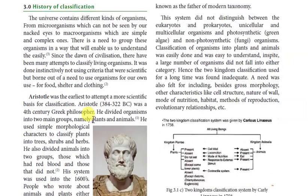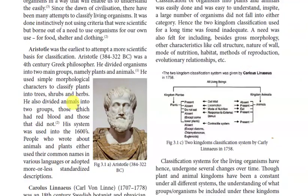On a scientific basis, the earliest scientist to classify animals was Aristotle. I remember from my advanced studies when my advanced biology teacher taught about classification, he mentioned much about Aristotle. Aristotle was the earliest to attempt a more scientific basis for classification. He lived many years before Christ — he was a fourth century Greek philosopher.